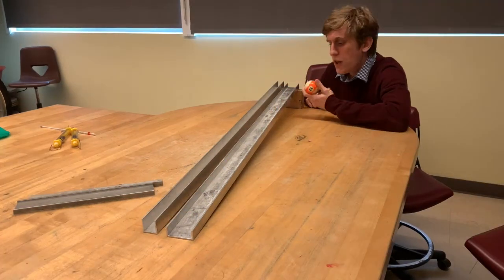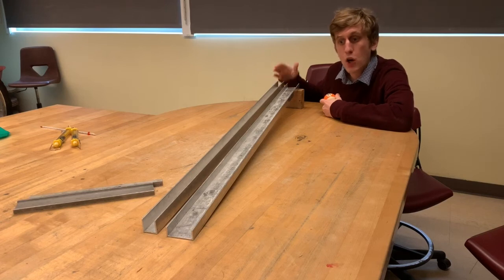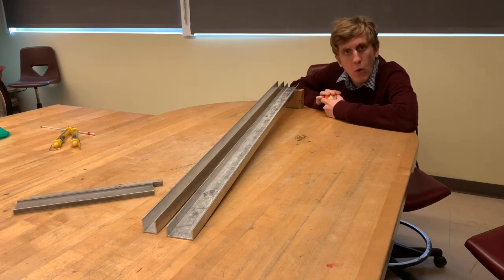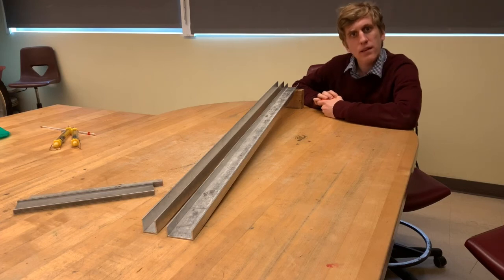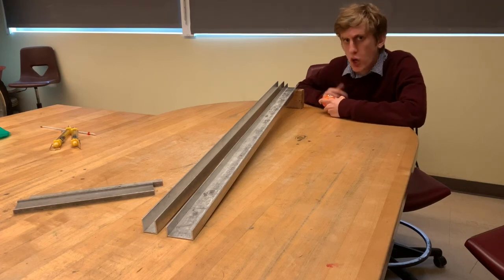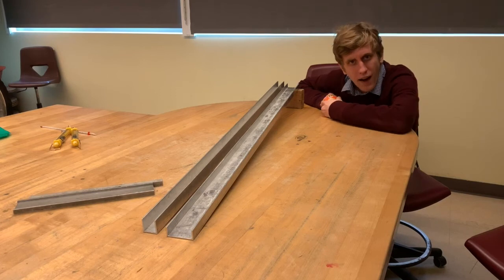As we can see, the billiard ball rolling down this track rolled much faster than the billiard ball rolling down this track. But based on our model, there's no reason that that would be the case. So what's going on?